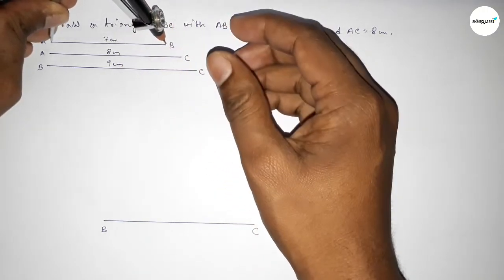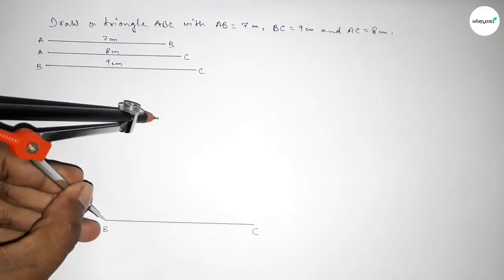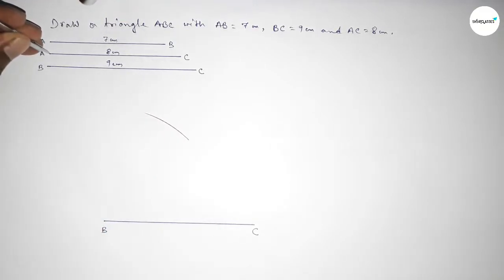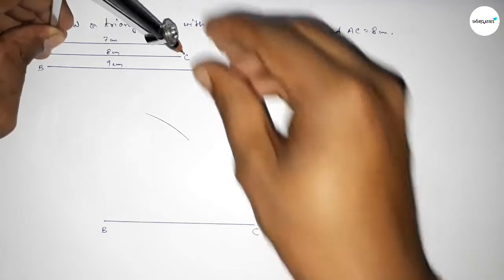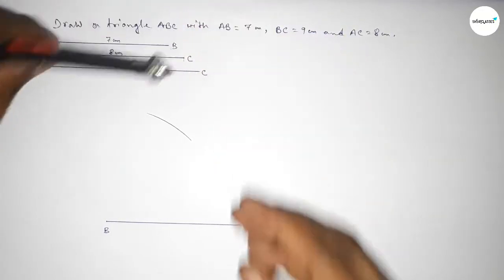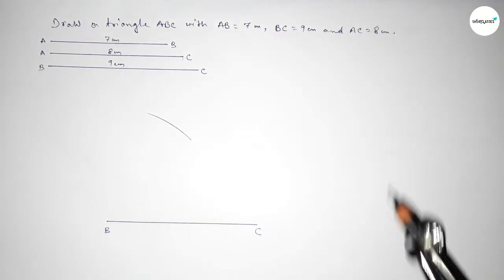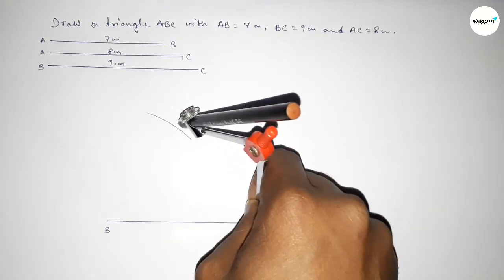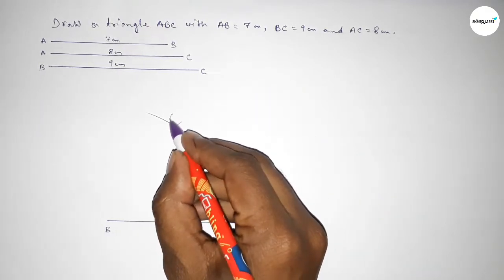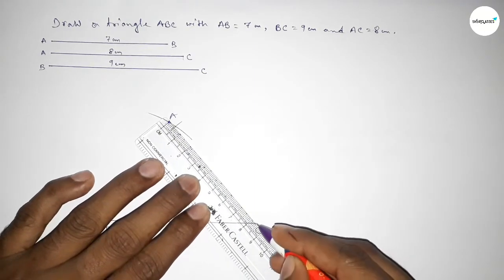Next, taking the length AB equal to 7 centimeter by using compass, putting the compass on point B, and drawing an arc. Again, taking the length AC equal to 8 centimeter by using compass, putting the compass on point C and cutting here. Both curves intersect at a point — this is point A.